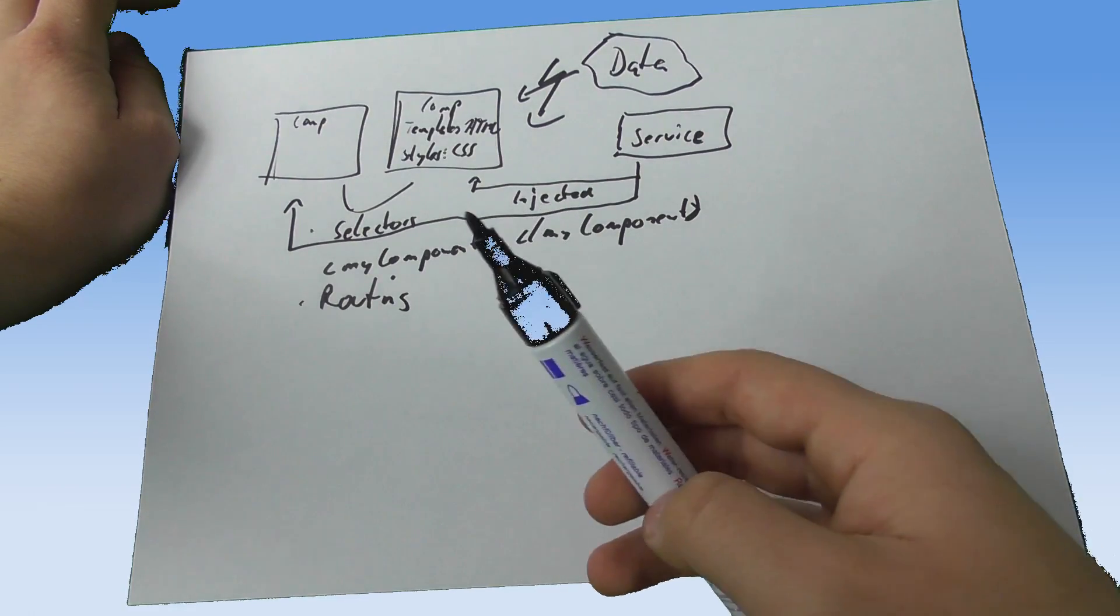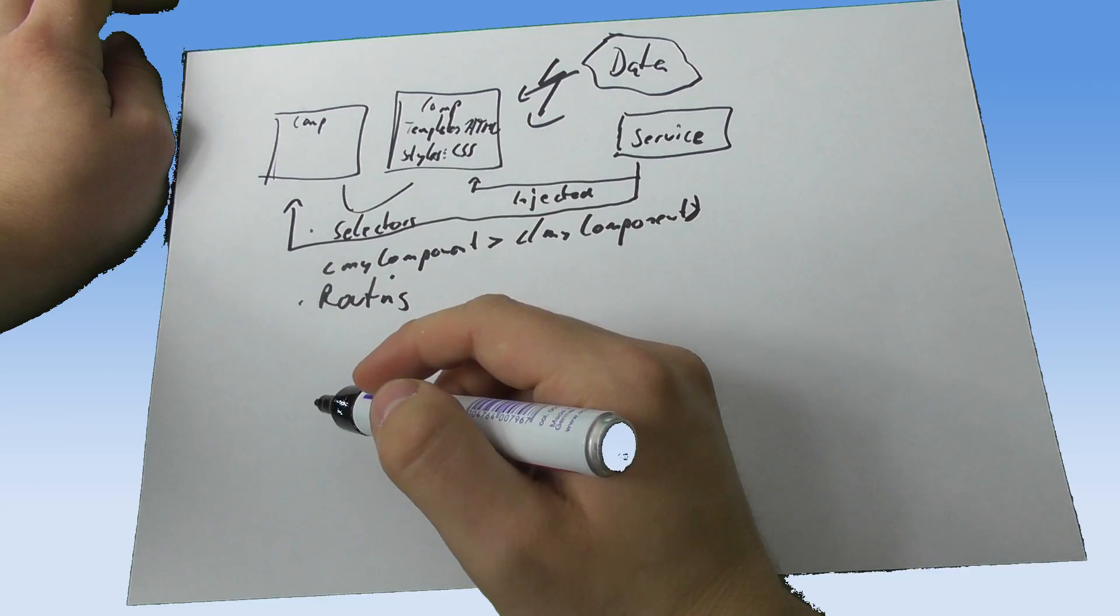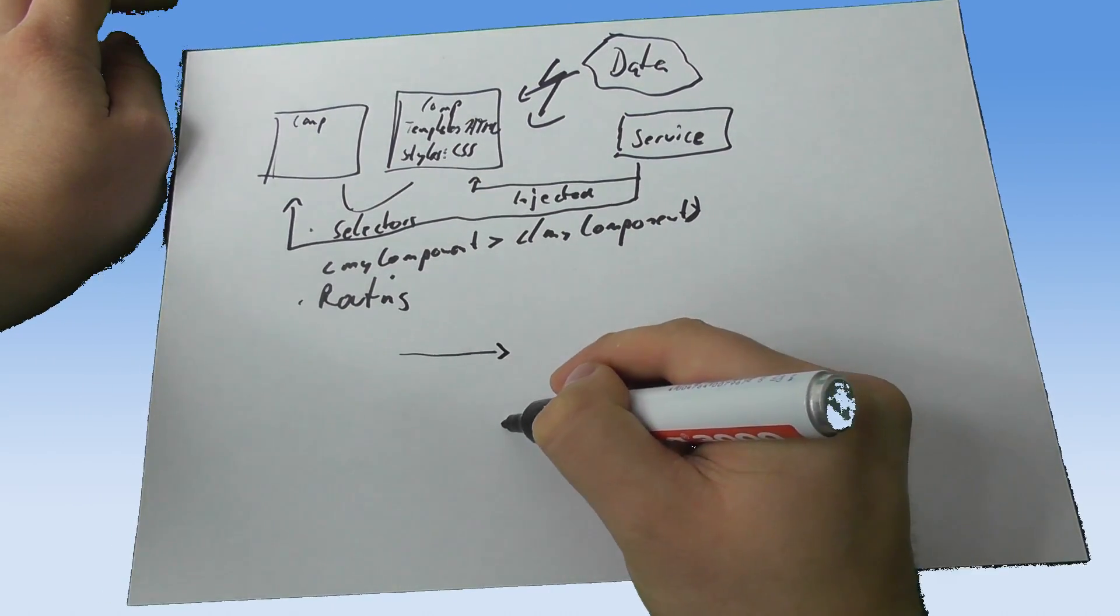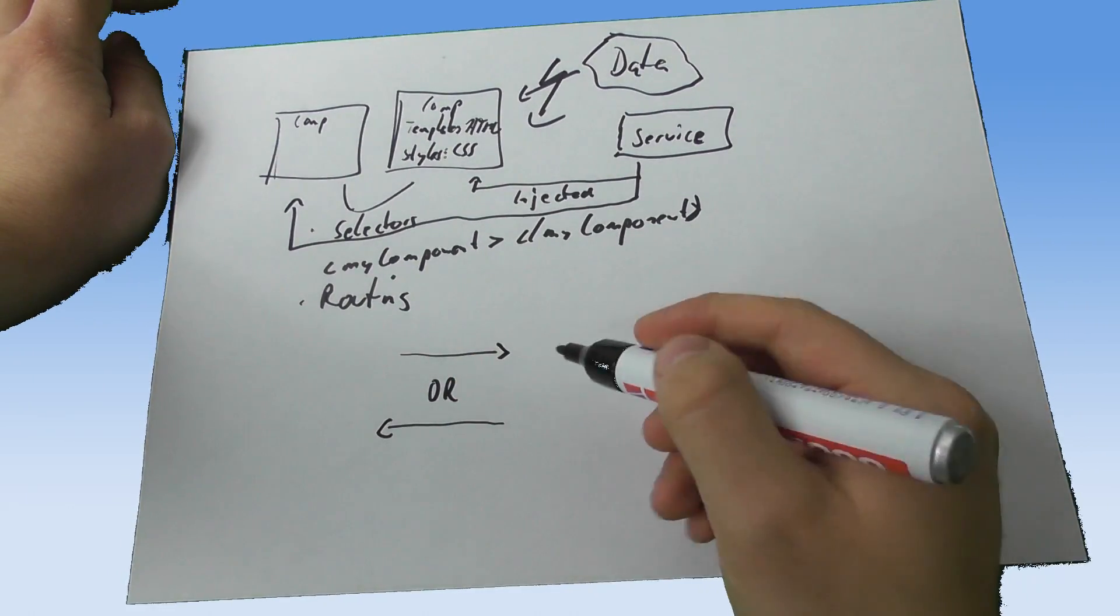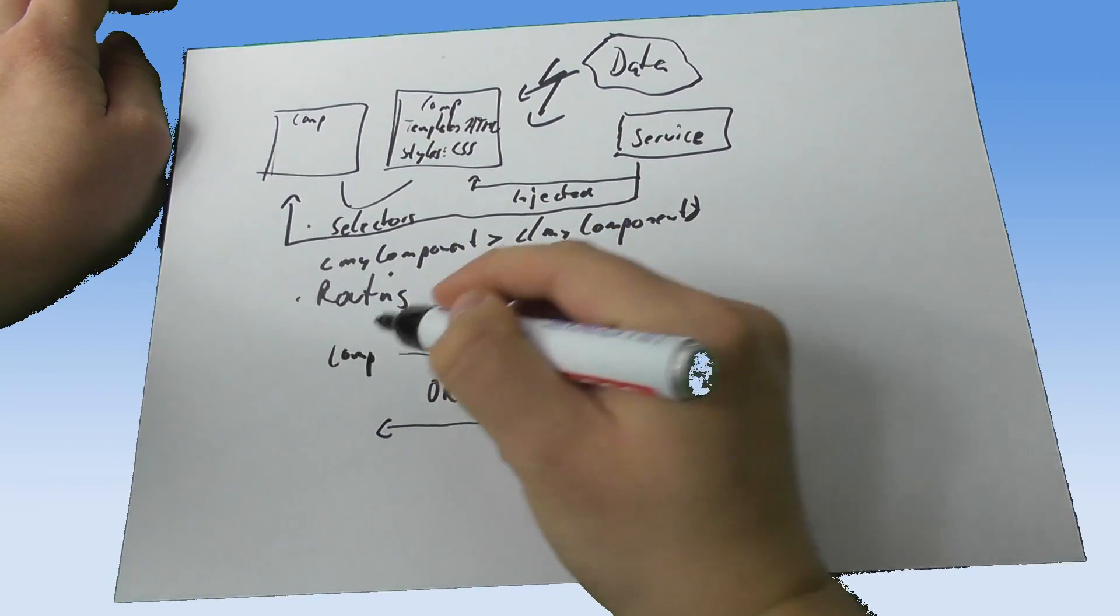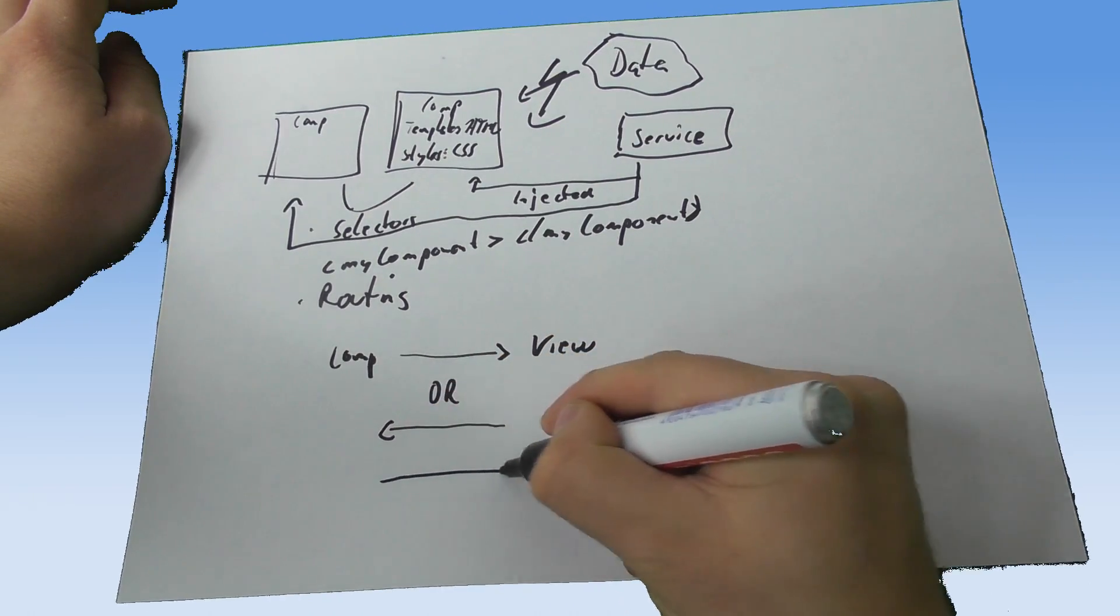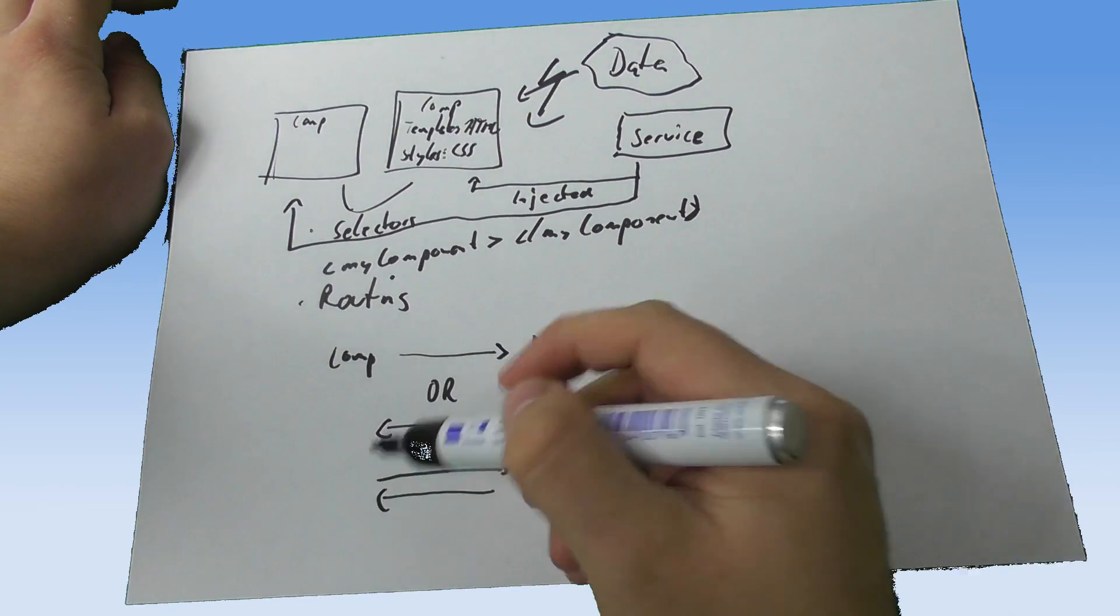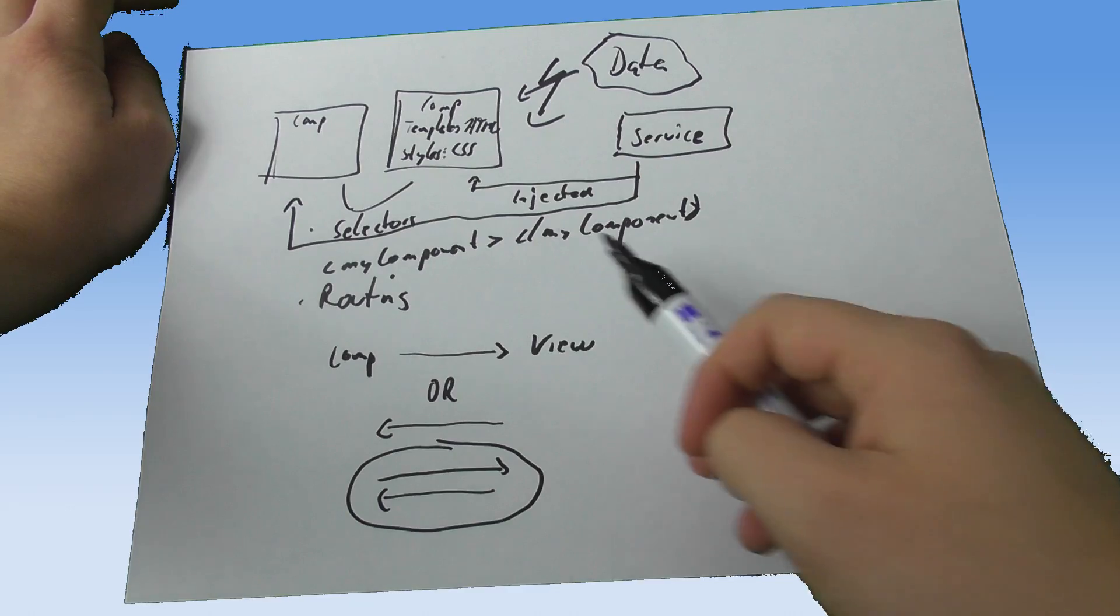Now data binding is something we'll already come to in the next video, but be aware that in general Angular 2 has unidirectional data binding which means data only flows in one direction, so basically from the view to the component or vice versa. There is two-way data binding too, but this is some kind of a special case I will talk about when we come to it. But in general be aware that we got this unidirectional flow.